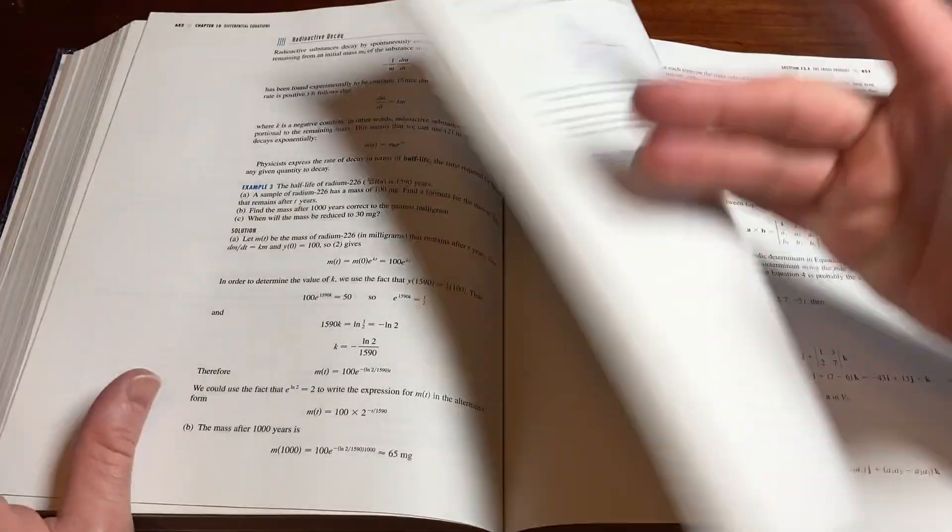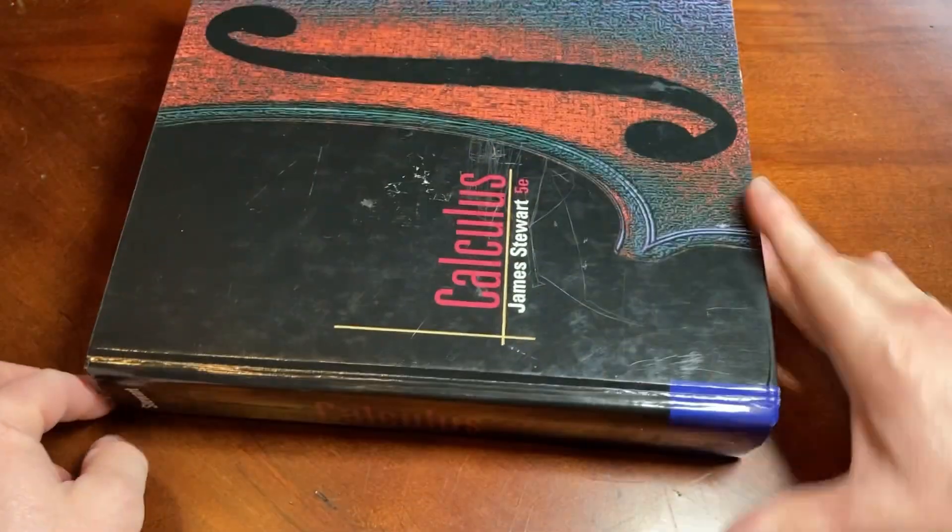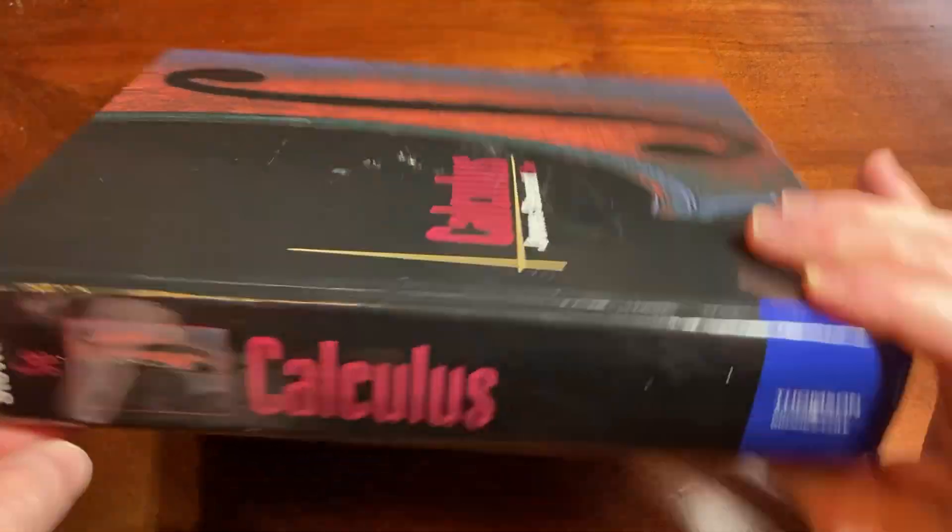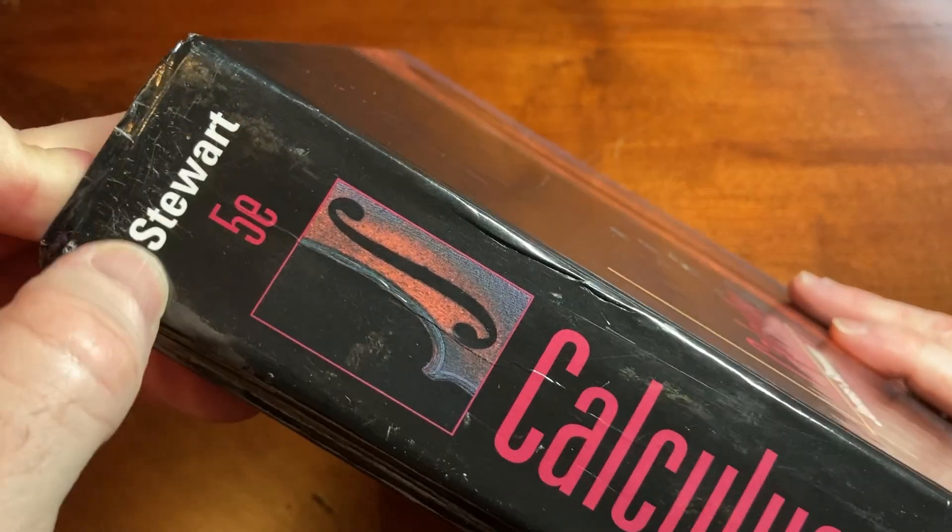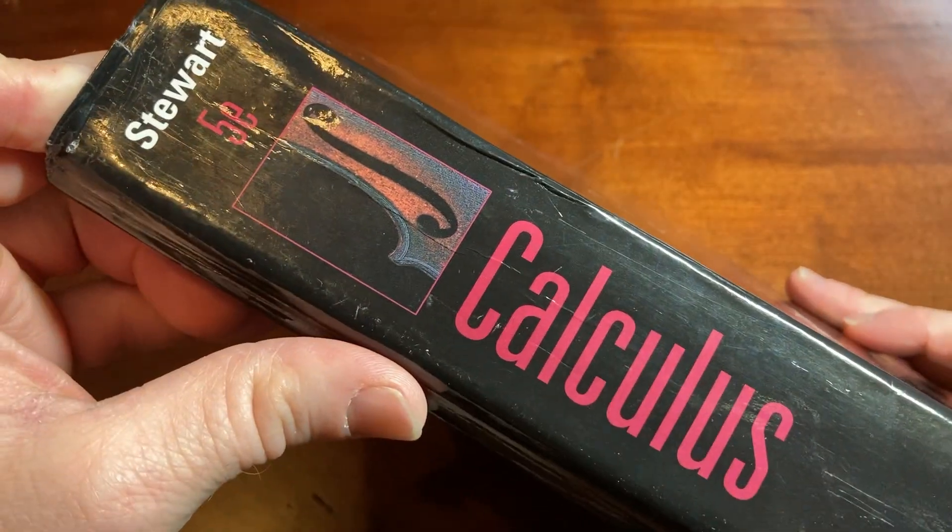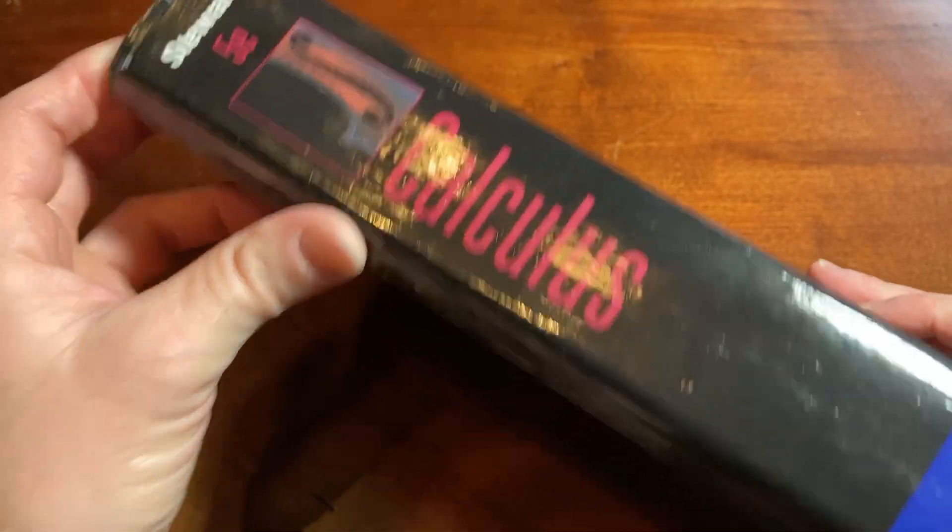This is the book I used. However, the version I used was a little bit different. I used the early transcendentals version. This is Calculus by James Stewart. He passed away, he was super famous because of this book.